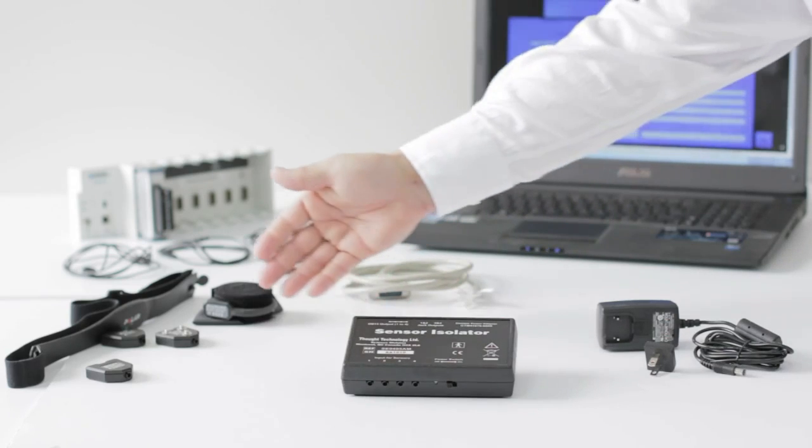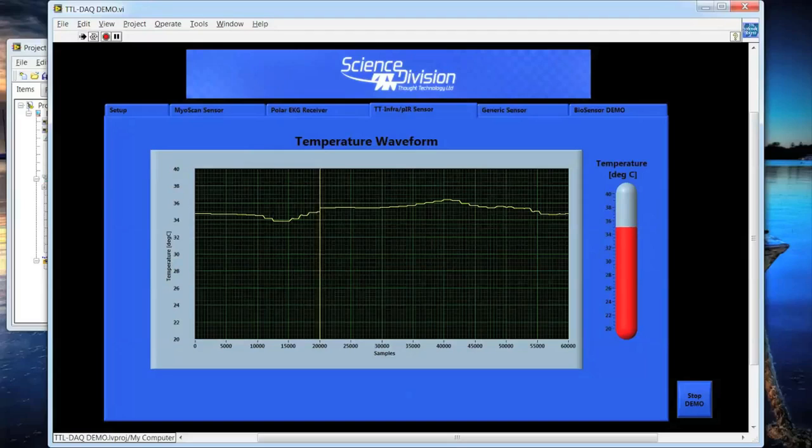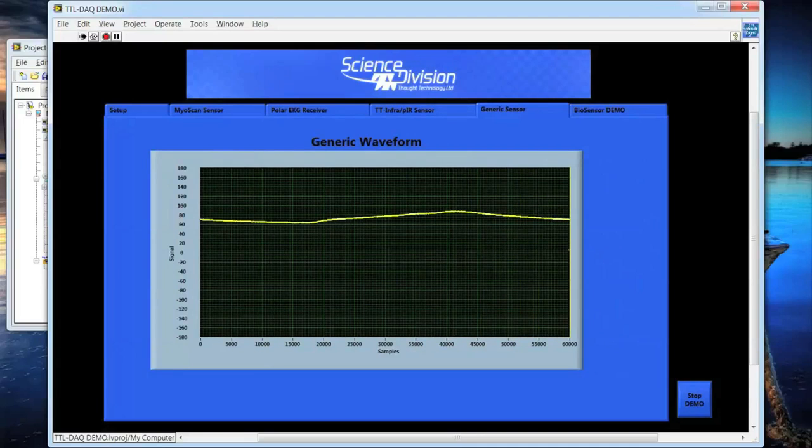Now suppose you were interested in acquiring data from surface EMG, heart rate, external body temperature, and respiration, perhaps for an experiment related to stress.